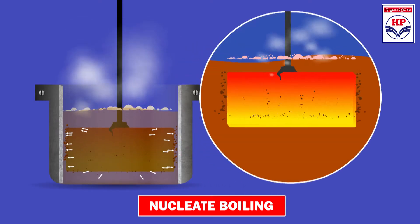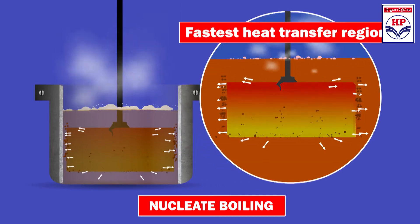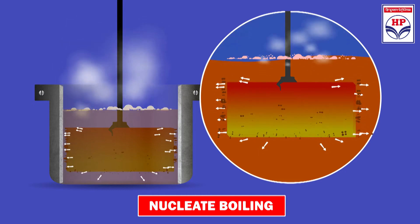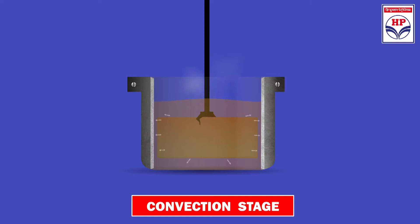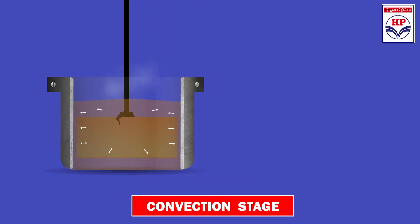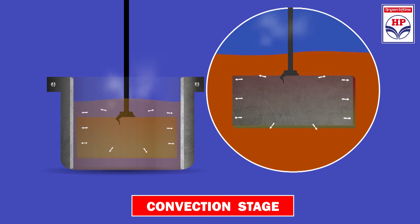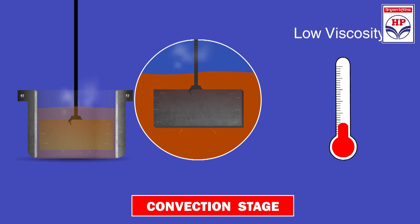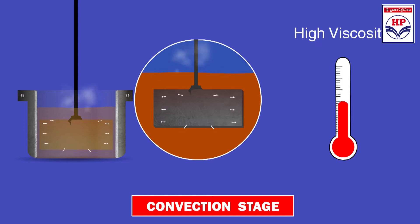Upon further cooling, the vapor blanket collapses, resulting in nucleate boiling, which is the fastest heat transfer region. The point at which this transition occurs and the rate of heat transfer in this region depends on the oil's overall molecular composition. When the temperature of the hot oil-steel interface is less than the oil's boiling point, nucleate boiling will cease and convective cooling will begin. Heat transfer in this region is exponentially dependent on the oil's viscosity, which will vary with the degree of oil decomposition. Increasing oil decomposition will result initially in a reduction of oil viscosity followed by increasing viscosity as the degradation process increases.